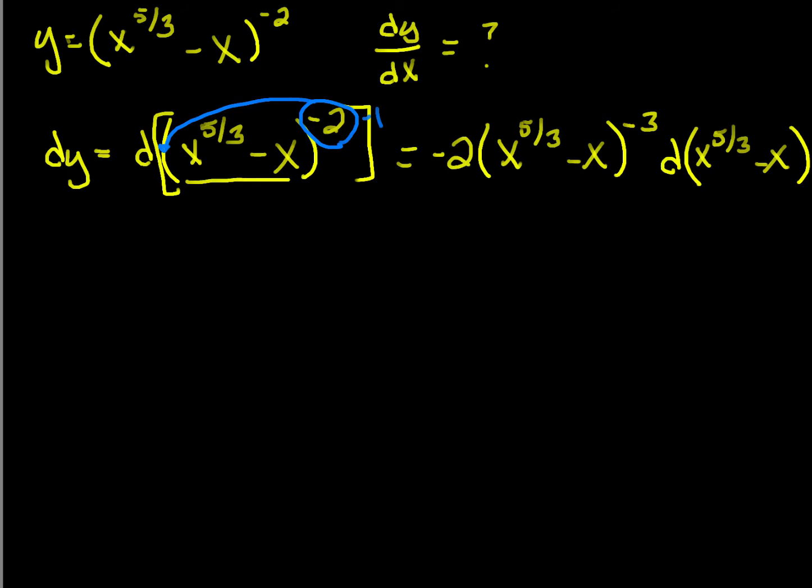Now working this differential, we're going to come through, and of course it's going to distribute across the subtraction. And I'm going to do two steps in one, because when I take the differential of this, even though it's a rational number, it's still the same rule. It comes down, it'll become my coefficient, and I'll subtract one. So this is equal to negative two times x to the five-thirds minus x raised to the negative three power, all times the differential here is five-thirds x to the two-thirds dx minus dx.